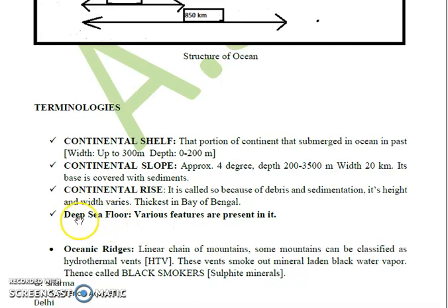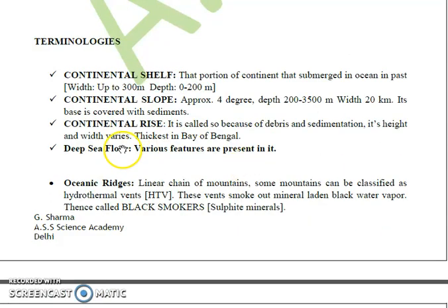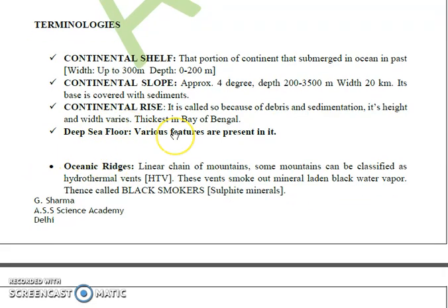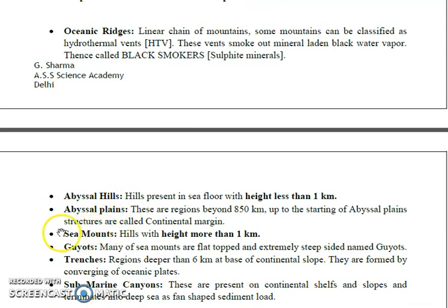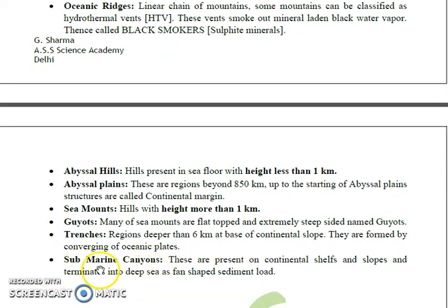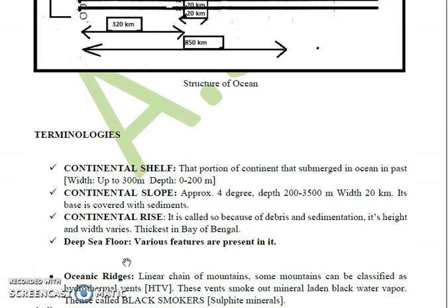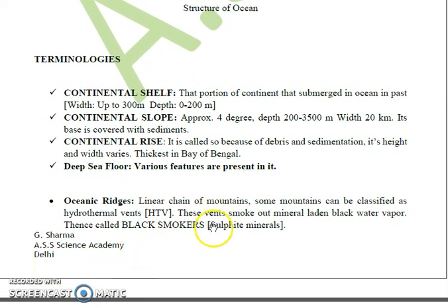The fourth part is the deep sea floor, which itself has many sub-parts. The features of the deep sea floor are: (a) oceanic ridges, (b) abyssal hills, (c) abyssal plain, (d) seamounts, (e) guyots, (f) trenches, and (g) submarine canyons. This is a very important topic — examiners pick questions from deep sea floor every year, so be careful about it.